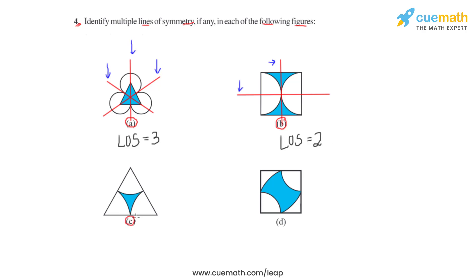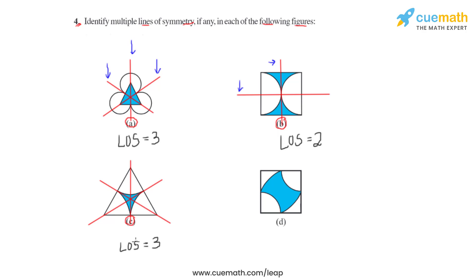Moving on to figure C, we again see a triangle with a shape inside it. As we already saw, if we have a triangle we can draw three lines of symmetry through the three vertices, provided the figure is symmetrical around the triangle. So figure C also consists of three lines of symmetry — this is always the case when a triangle is present in a symmetrical figure.